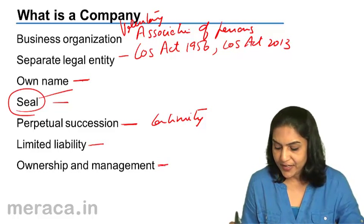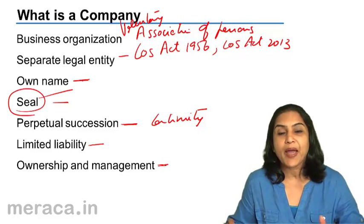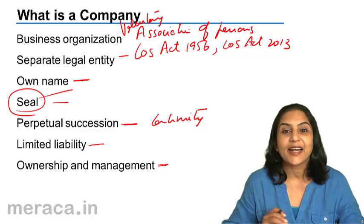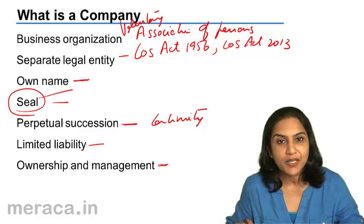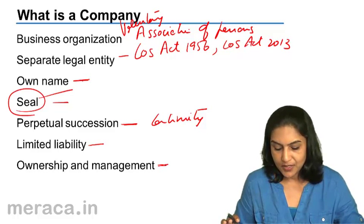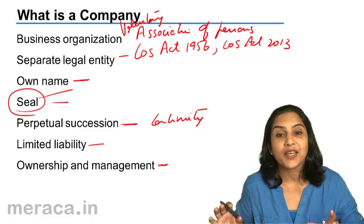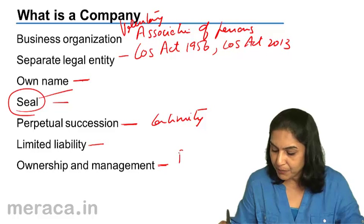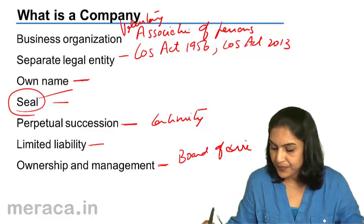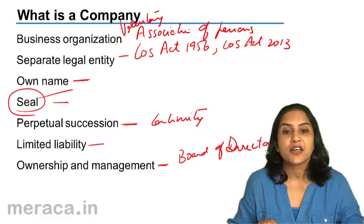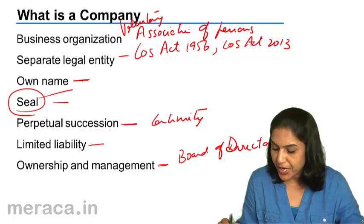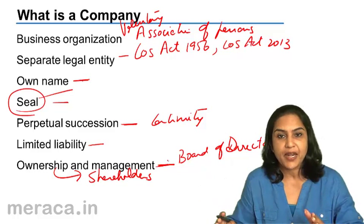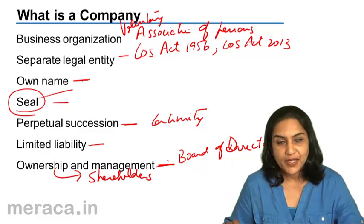Another interesting aspect of the company is that ownership and management are different. Who are the owners of a company? A large number of people scattered all over. It is not possible for these several owners to manage the affairs of the company. So the owners — they are called shareholders — they appoint a board of directors. The board of directors is responsible for the management of the company. Shareholders are the owners; ownership is with the shareholders. But management is professionally managed by the board of directors appointed by the shareholders.